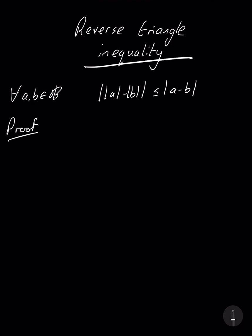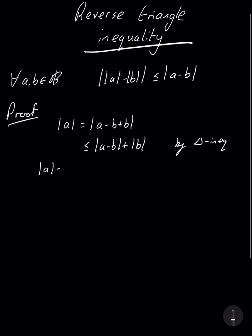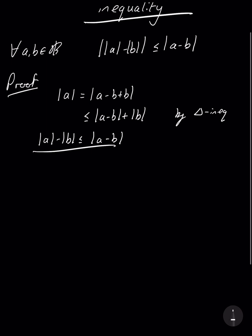Firstly, we take the absolute value of a and add zero by subtracting and adding b, so we have |a| = |(a - b) + b|. This is less than or equal to |a - b| + |b| by the standard triangle inequality. If we rearrange this, we have that |a| - |b| is less than or equal to |a - b|. So this is the first inequality.